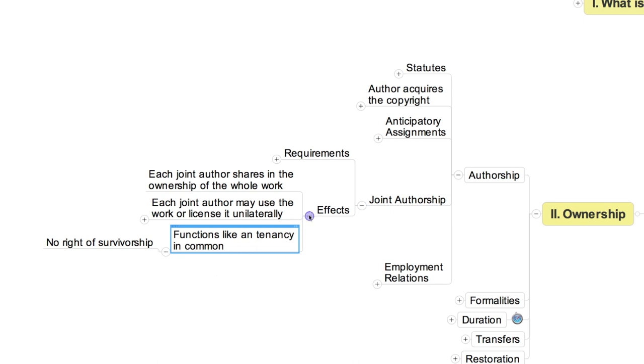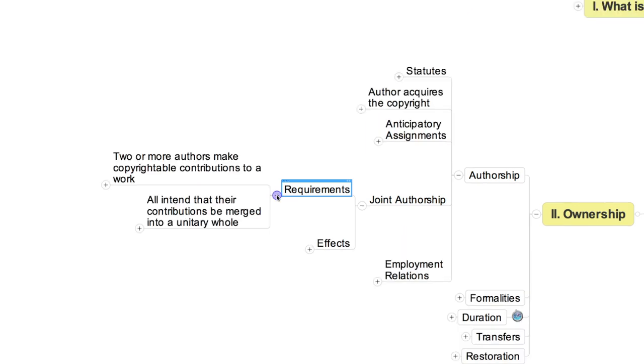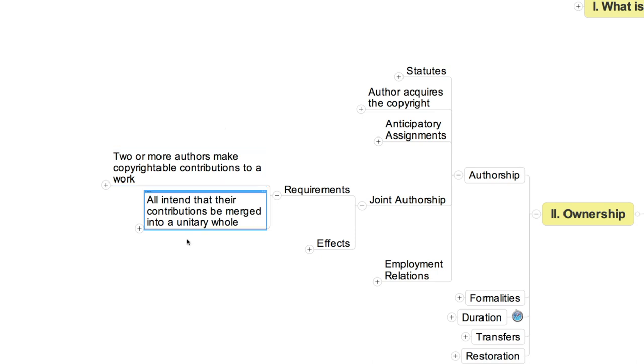In sum, joint authorship has many important legal implications. So when and how does this situation arise? The answer, with respect to US law, is that a person claiming to be a joint author has to show both of two things. First, he must show that each of the people, including himself, that he asserts share in the copyright made a copyrightable contribution to the final work at issue. Second, he must show that all of these contributors intended that their various contributions be merged into a unitary whole. These requirements are usually construed quite strictly by the courts, and the net result is that most people who seek the status of joint author fail.